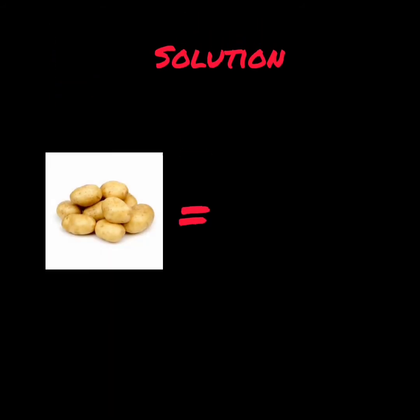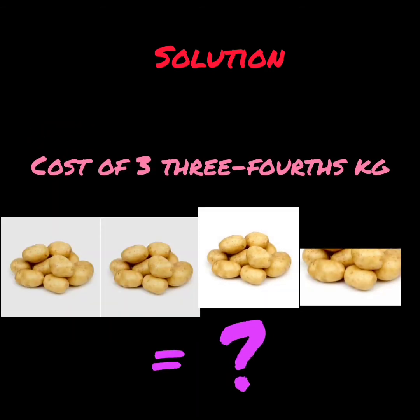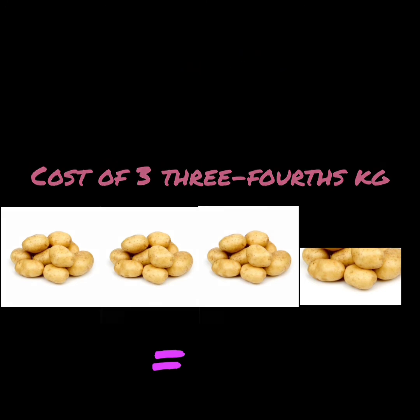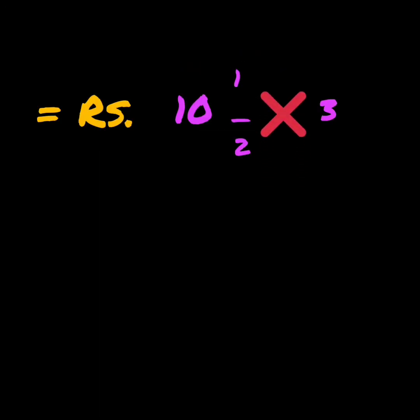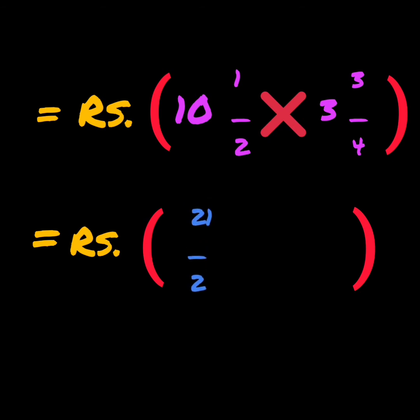If the cost of 1 kg potatoes is rupees 10 and half, then to find out the cost of 3 and 3 by 4 kg of potatoes, we will multiply 10 and half by 3 and 3 by 4. We can see both fractions are mixed fractions, so first convert them into improper fractions. 10 and half becomes 21 by 2, and 3 and 3 by 4 becomes 15 by 4.